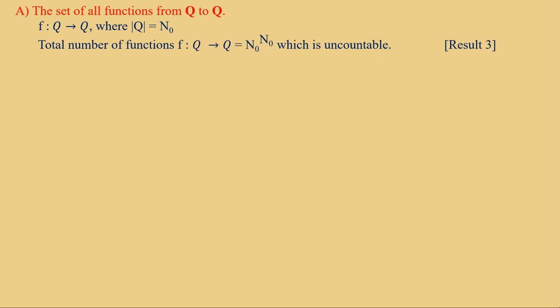Now let's check the options one by one. Option A: the set of all functions from Q to Q. The cardinality of Q is ℵ₀. Therefore, the total number of functions F from Q to Q equals ℵ₀ raised to ℵ₀, which is uncountable.